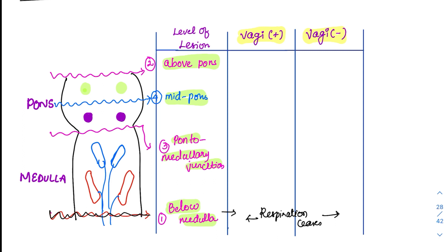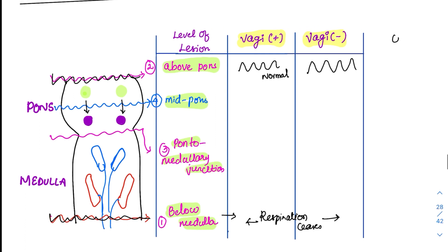For above pons: when we cut above the pons, all respiratory centers are preserved, so breathing will be normal if the vagus is intact. If the vagus is also cut, the breathing will become slow and deep. This is because with vagus cut, the pneumotaxic center is still telling the apneustic center to stop — all the pontine centers are preserved. So with only the vagus cut, the apneustic center is under one control from the pneumotaxic center, and inspiration becomes slow and deep.